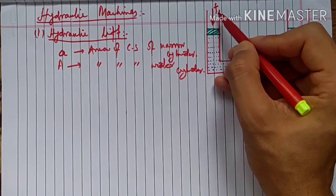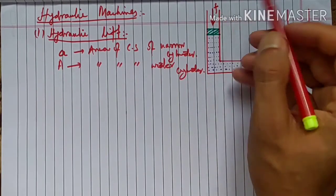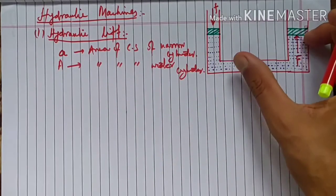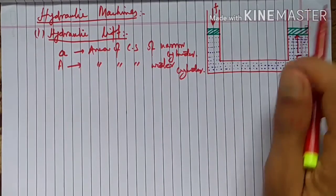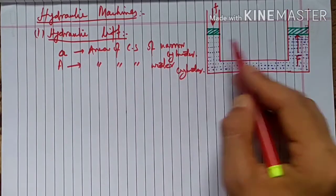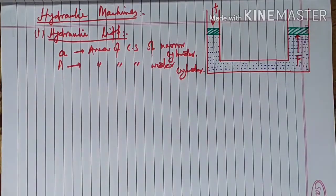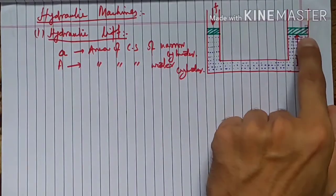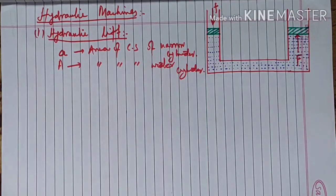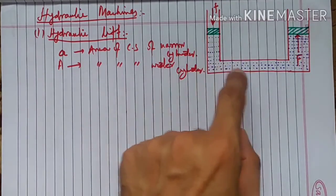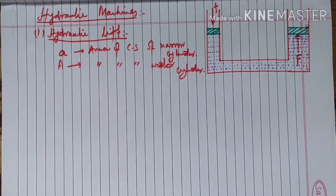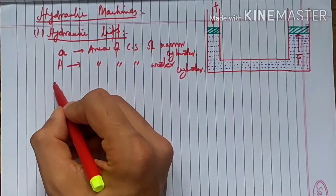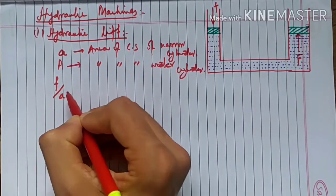If we exert a downward force 'f' on the narrow piston, this extra pressure is transmitted through the liquid to all points. The piston on the narrow side moves down, and the piston on the wider side moves upward. The pressure exerted by the small piston is f divided by a, which is force per unit area.